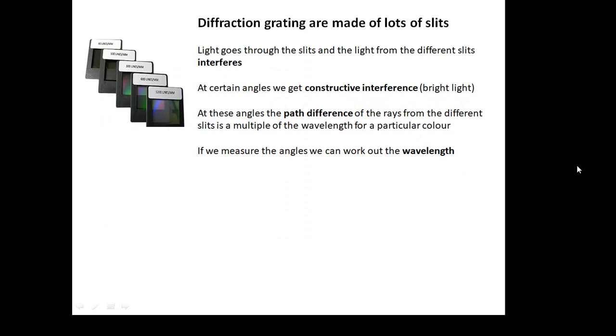What happens is that we put the light through the diffraction grating and we get interference. Each slit acts as a source and then all of these different sources interfere with each other. If you don't know about interference, I've already done a video on this. You should have a look at it first. At certain angles, we get constructive interference.